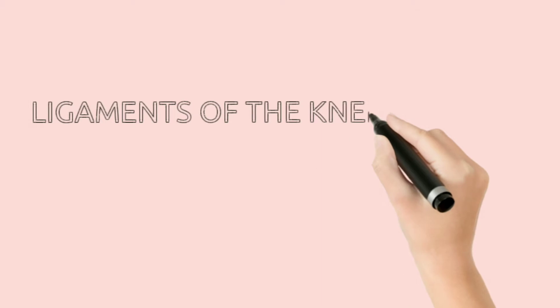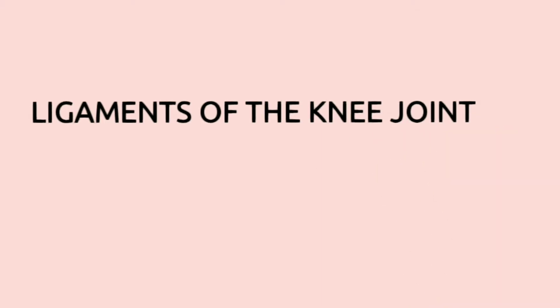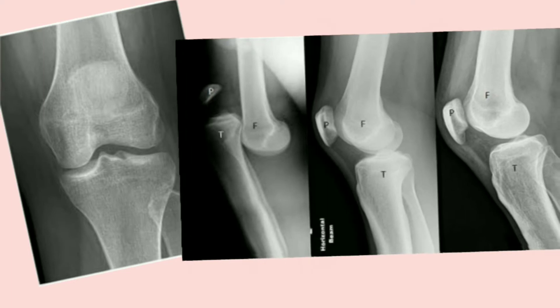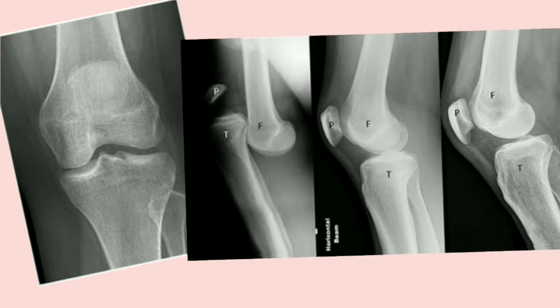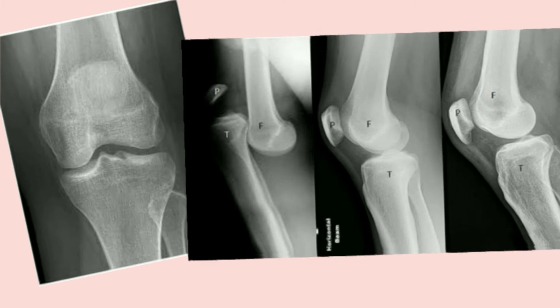The topic for today is ligaments of the knee joint. Many of you have told me to give information about the topic I'm giving mnemonics on, so today I thought of giving you some knowledge before giving the mnemonics. Here are some pictures of the knee joint — this is how the knee joint looks in an X-ray. This is a broken knee joint; we can see an X-ray of that. Now let's begin.